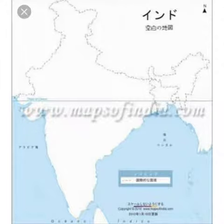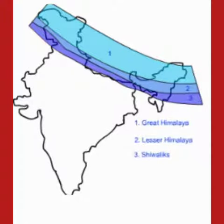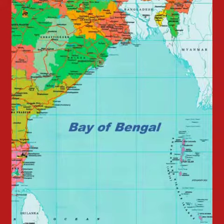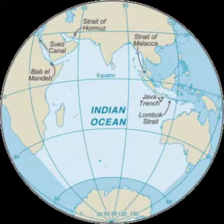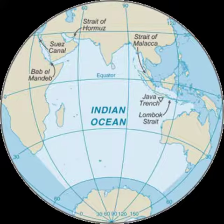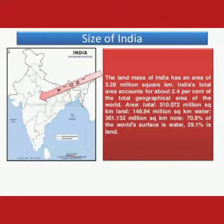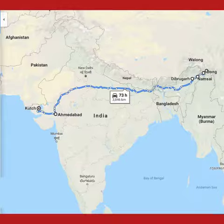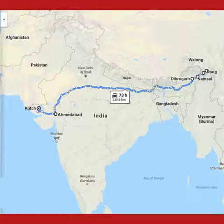India is a country of vast geographical expanse. In the north it is bound by the lofty Himalayas, the Arabian Sea in the west, the Bay of Bengal in the east, and the Indian Ocean in the south. India has an area of 3.28 million square kilometers. The north-south stretch from Kashmir to Kanyakumari is about 3,200 kilometers, and the east-west extent from Arunachal Pradesh to Kutch is about 2,900 kilometers.